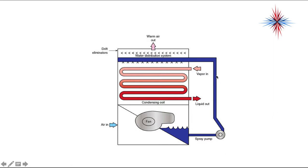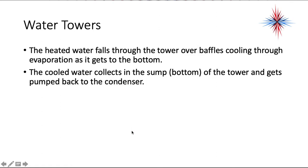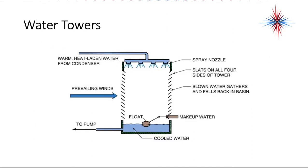The heated water from the condenser returns to the top of the tower and sprays down the inside, recirculating. Water is pushed through the condenser, up into the cooling tower, and pulled back down through the pump. The heated water falls through baffles, cooling through evaporation as it reaches the bottom. The cooled water collects in the sump and gets pumped back to the condenser.